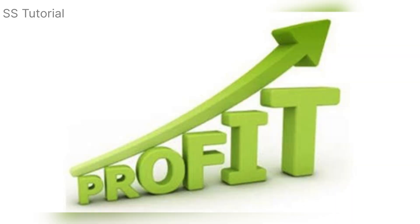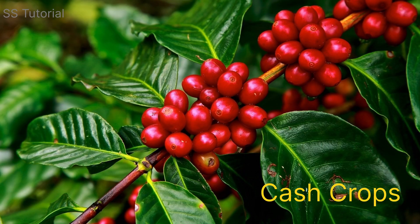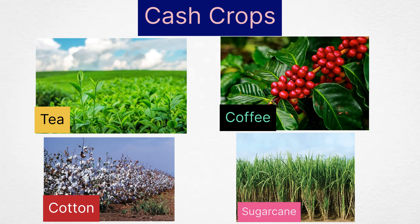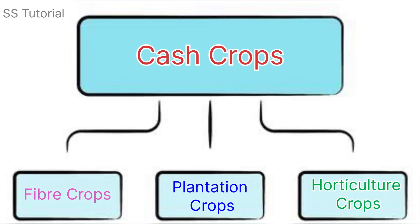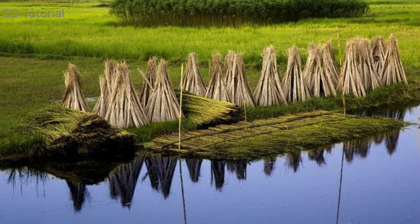The crops that are grown only for sale or for earning profit are called cash crops or profit crops. Tea, coffee, cotton, and sugarcane are all cash crops. Cash crops can be further divided into three types: fiber crops, plantation crops, and horticulture crops.